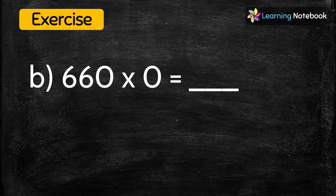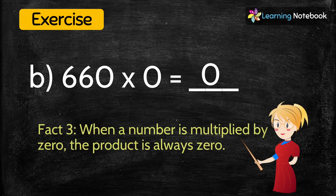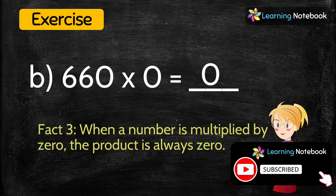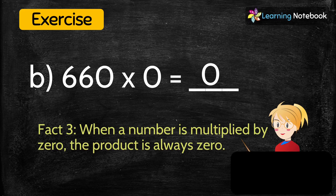The next question is: 660 multiplied by 0 equals? The answer is 0, because according to fact number 3, when a number is multiplied by 0 the product is always 0.